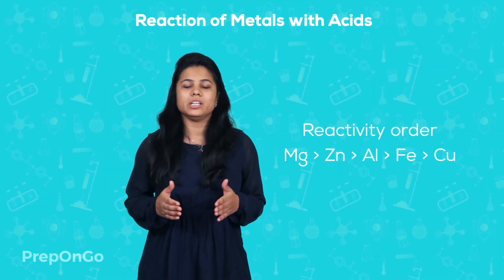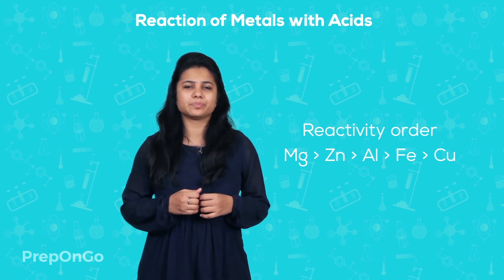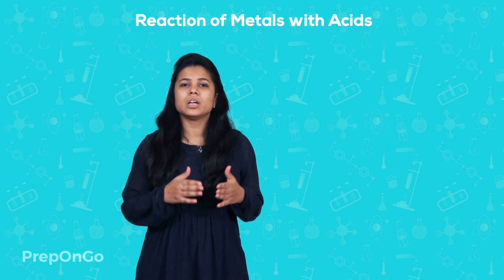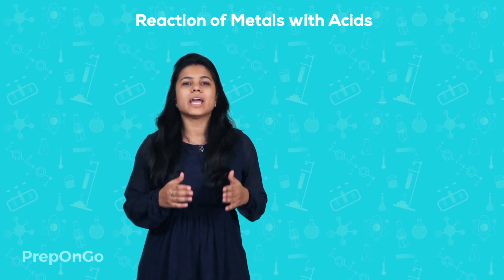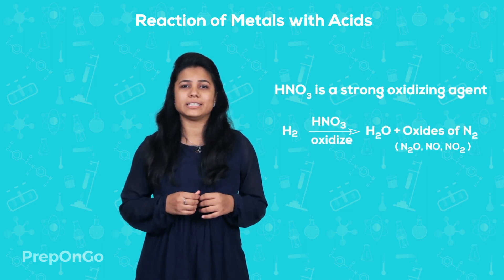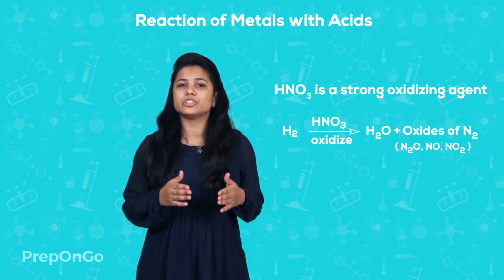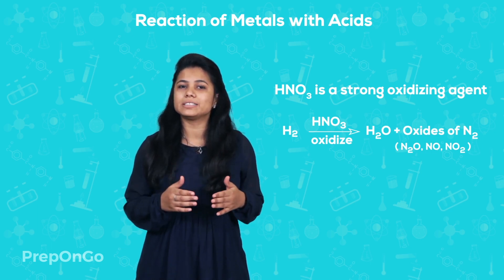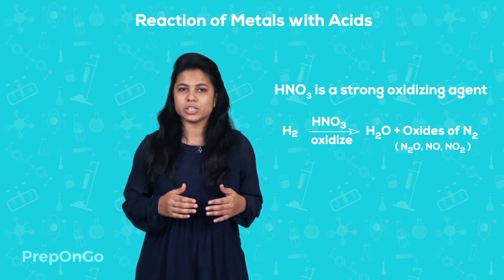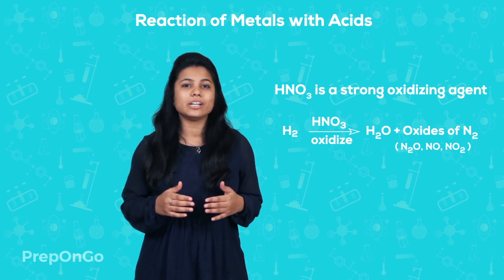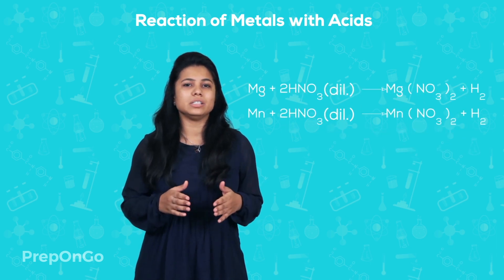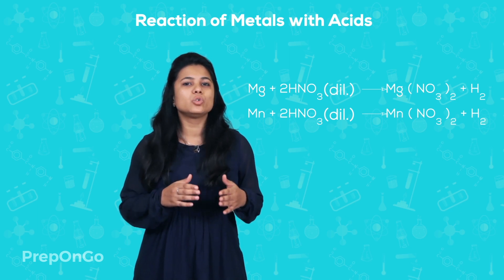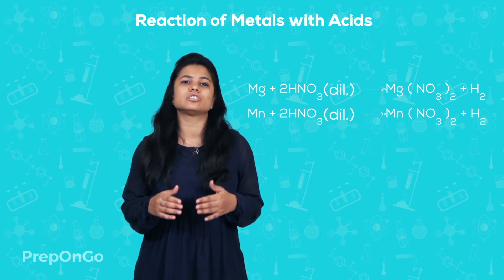From this activity, we can determine the reactivity of metals. We have seen that metals react with hydrochloric acid. We do not consider nitric acid for the same because nitric acid is a strong oxidizing agent. It oxidizes the hydrogen produced to water and itself gets reduced into its oxides such as nitrous oxides, nitric oxides, and nitrogen dioxides. However, magnesium and manganese react with very dilute nitric acid to form metal salts and release hydrogen gas.